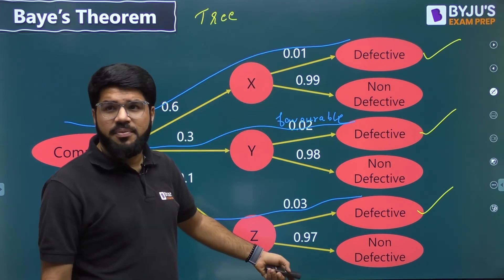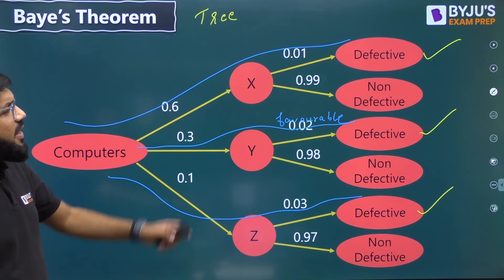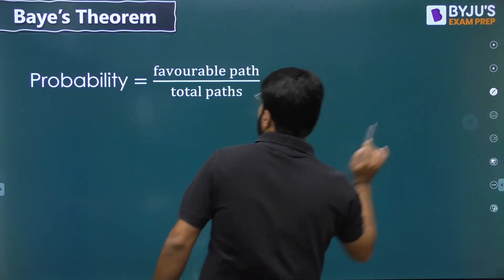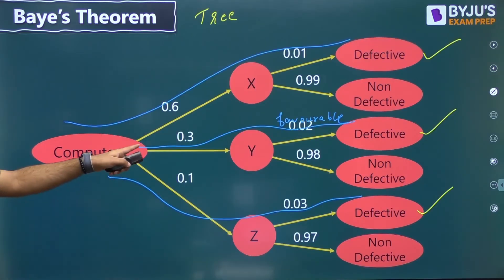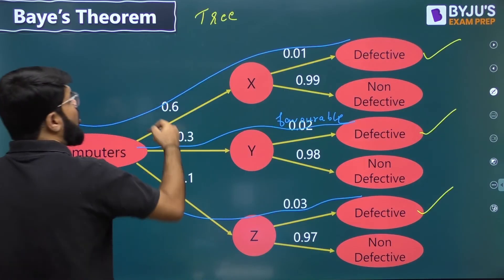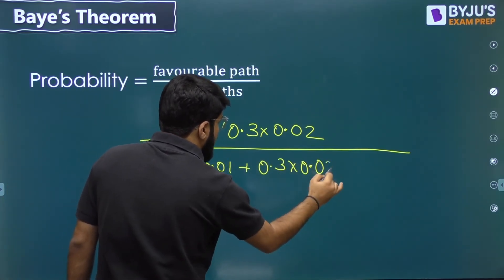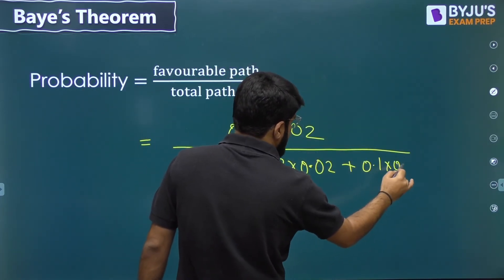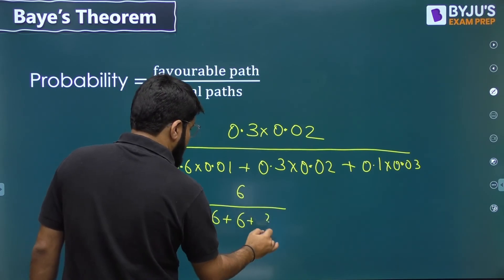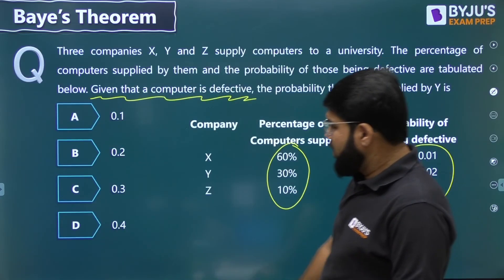Defective probability for X is 0.01, for Y is 0.02, for Z is 0.03. Favorable path upon total path: favorable is 0.3 × 0.02. Total denominator is (0.6 × 0.01) + (0.3 × 0.02) + (0.1 × 0.03). Numerator: 0.006. Denominator: 0.006 + 0.006 + 0.003 = 0.015. So 0.006 / 0.015 = 6/15 = 0.4. The answer is 0.4.